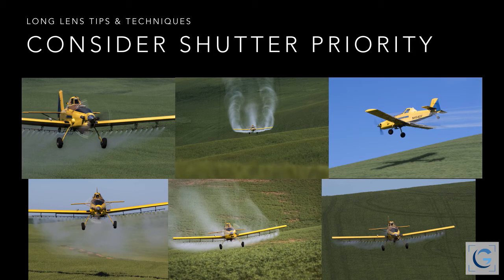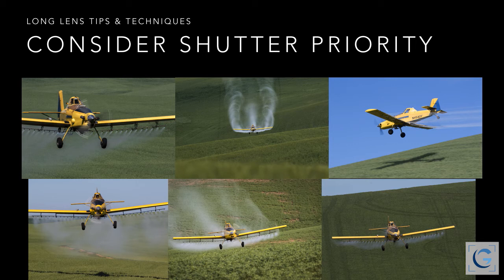When photographing moving subjects, one of the exposure modes I use least is shutter priority — and yet sometimes it makes a lot of sense. When photographing a crop duster over the Palouse, I could shoot manual mode, but the subject isn't always in the same lighting. When using shutter priority with a longer lens, the shutter speed becomes more important. One downside: what changes is the aperture, and there's less range of apertures than shutter speeds — so there's more risk of running out of apertures.